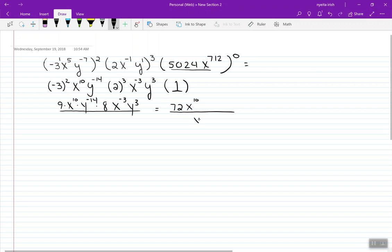Y to the minus 14, cross the line, change the sign of the exponent. X to the minus 3, cross the line, change the sign of the exponent. Y to the positive 3, though, stays put. Positive exponents stick. Negative exponents, cross the line.